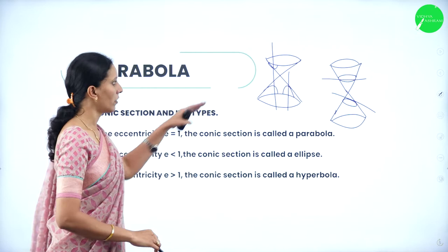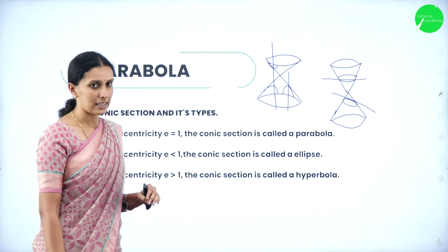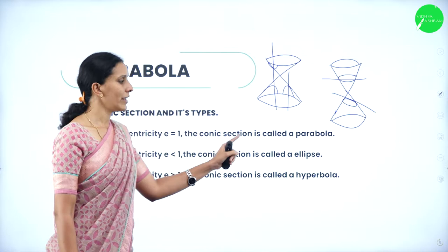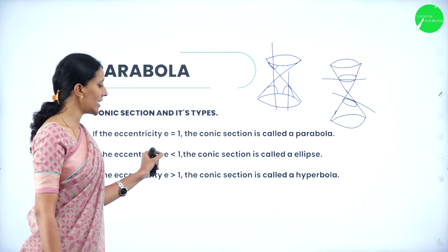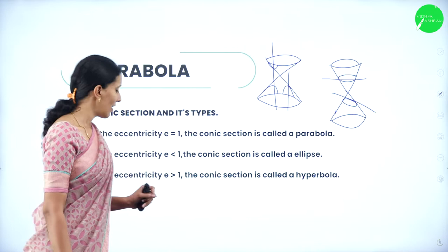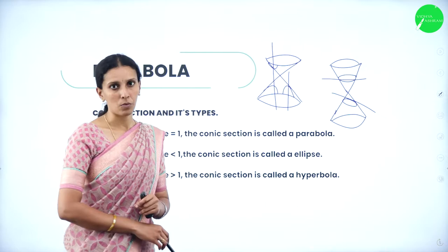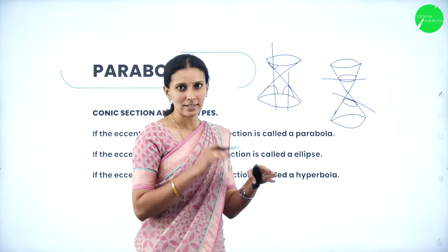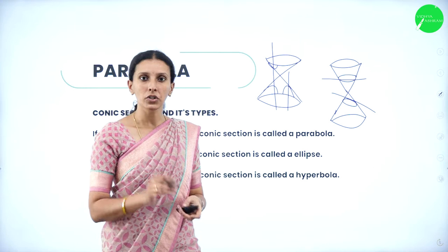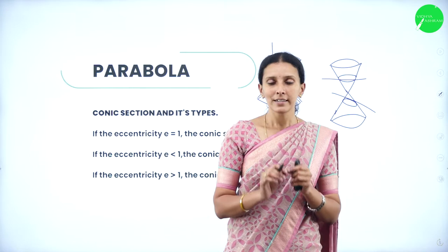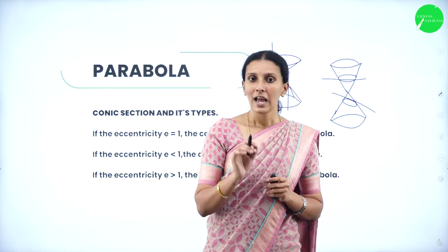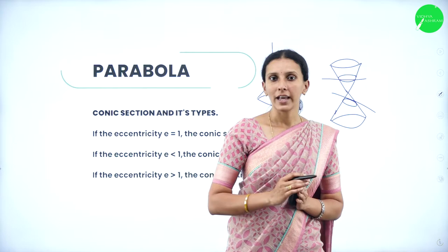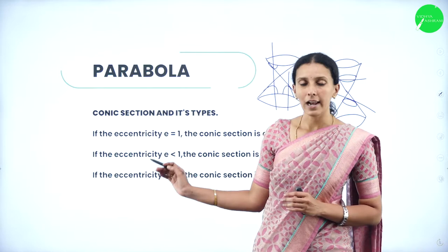All these curves are obtained from cones. According to eccentricity: if E equals 1, the conic section is a parabola; if E is less than 1, it is an ellipse; if E is greater than 1, it is a hyperbola. The eccentricity determines whether the curve is a parabola, ellipse, or hyperbola.